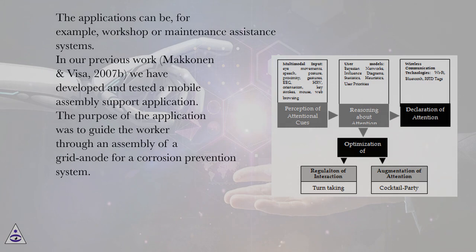The applications can be, for example, workshop or maintenance assistance systems. In our previous work, Makonen and Visa 2007b, we have developed and tested a mobile assembly support application. The purpose of the application was to guide the worker through an assembly of a grid anode for a corrosion prevention system.